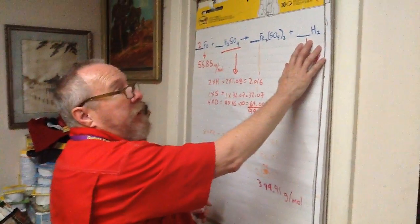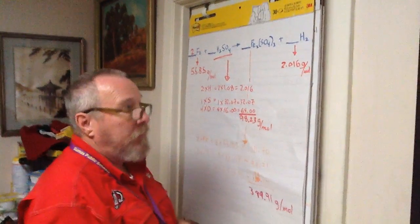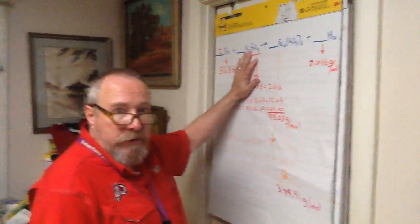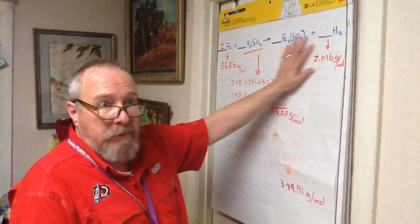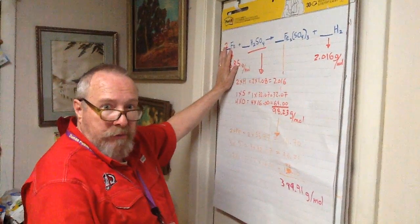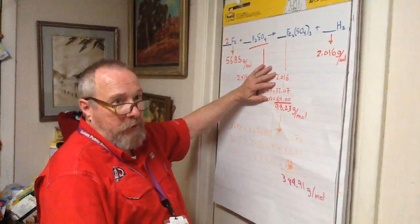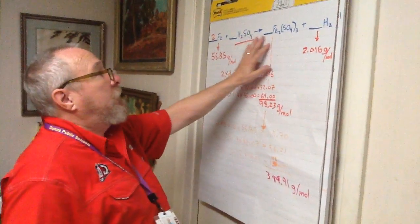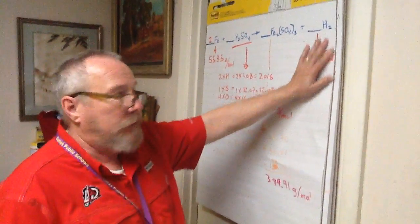Not every problem is going to be written and give you this. It might be a pure word problem, where they say elemental iron is added to concentrated sulfuric acid, and they don't give you any of these chemical formulas. You have to know the rules of naming to deduce a chemical formula. You know, to give iron 3 sulfate plus molecular hydrogen.